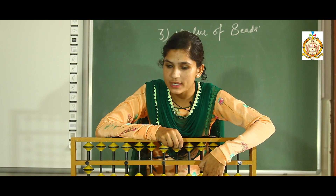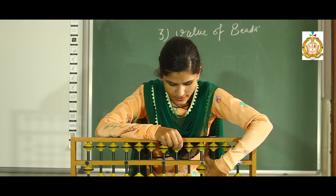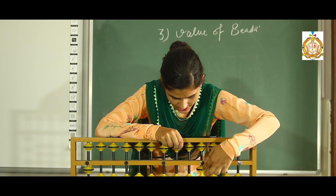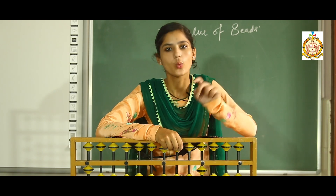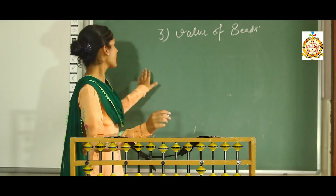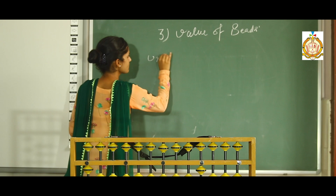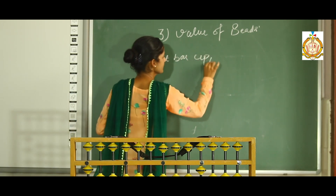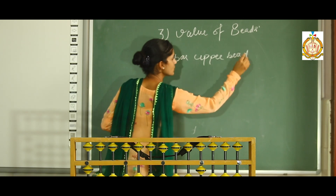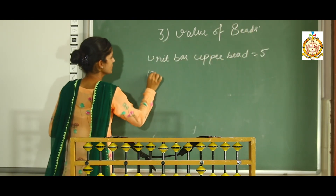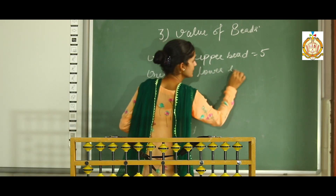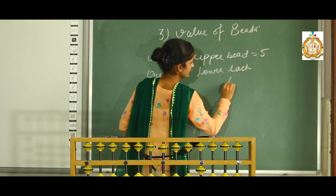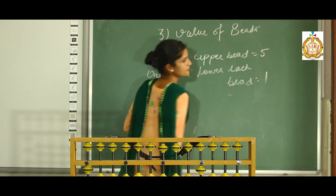The unit bar lower bead value — each bead has a value of 1. So the first bead has value 1, the second bead has value 1, the third bead has value 1, and the fourth bead has value 1. To summarize: the unit bar upper bead value is 5, and each unit bar lower bead value is 1.